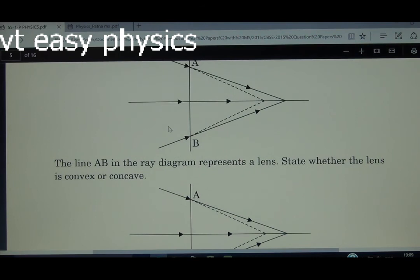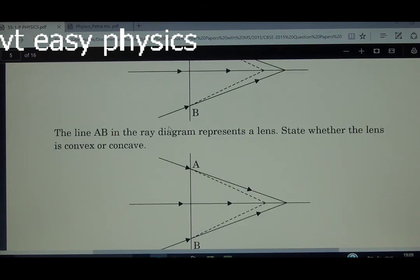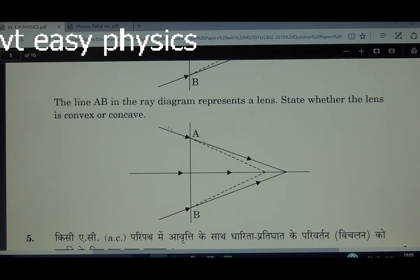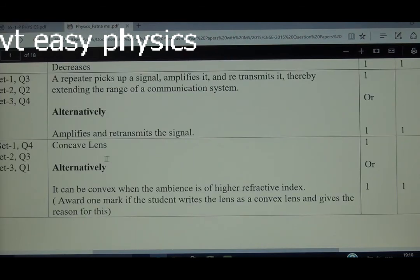The line AB in the ray diagram represents a lens. State whether the lens is convex or concave. So if we can understand AB is the lens here, then rays focus on the dotted line. In the lens's presence, the rays are focusing far away. This means it must definitely be a concave lens. So answer is concave lens. It can be convex lens in a special case if the surrounding medium's refractive index is greater than the lens material's refractive index.